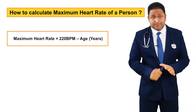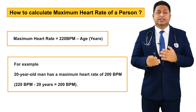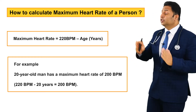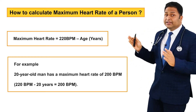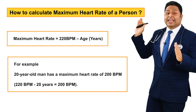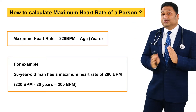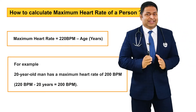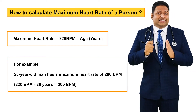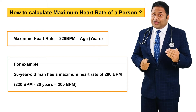For example, if a 20-year-old man has a maximum heart rate of 200 beats per minute — that is 220 minus the age of 20 years, which equals 200 beats per minute. So anything above that level would be considered abnormal and would require further evaluation.